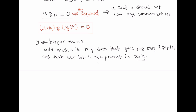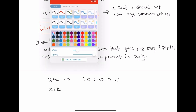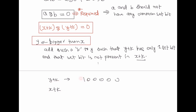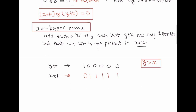We add k so that y becomes a power of 2. If y plus k becomes, say, a power of 2, then since y is bigger than x, x plus k will not have that bit set — its maximum value is less than y plus k. So taking AND between them will give 0. Our approach is to make y plus k an exact power of 2.